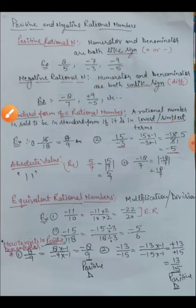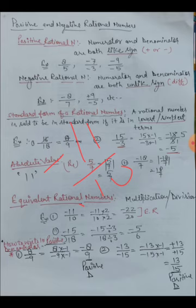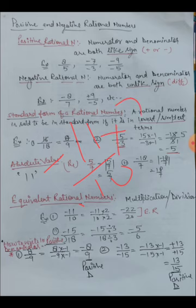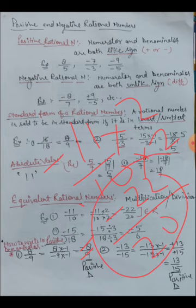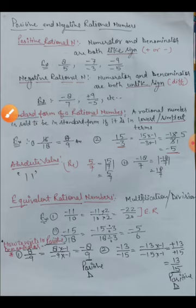Another example: for minus eleven upon ten, write its equivalent rational numbers. You can choose any number — multiply both numerator and denominator by the same number. For example, multiply by two: minus eleven times two is minus twenty-two, and ten times two is twenty. So minus twenty-two upon twenty is an equivalent rational number of minus eleven upon ten. This is the rule: multiply or divide by the same number in both numerator and denominator.